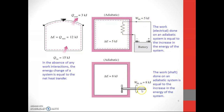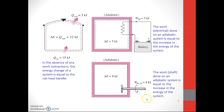For shaft work: the shaft work done on an adiabatic system is equal to the increase in the energy of the system. This is the increment of energy — you have supplied shaft work of 8 kilojoules, so the change in energy is also equal to 8 kilojoules.